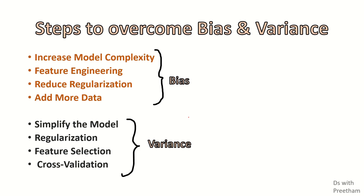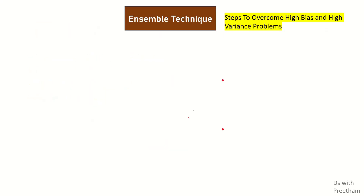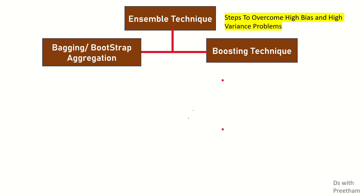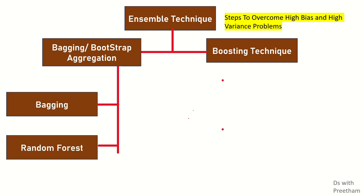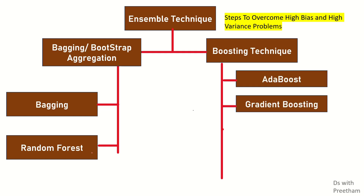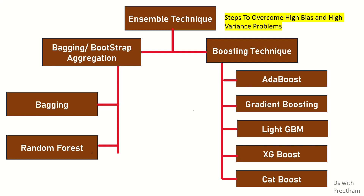First in machine learning, cover the basics: metrics, linear regression, logistic regression, case studies, decision tree, and then go for ensemble techniques. There are two types of ensemble: bagging or bootstrap aggregation, and boosting technique. Under bagging: random forest is the main algorithm. Under boosting: AdaBoost, Gradient Boost, LightGBM, XGBoost, and CatBoost — these are the main algorithms.